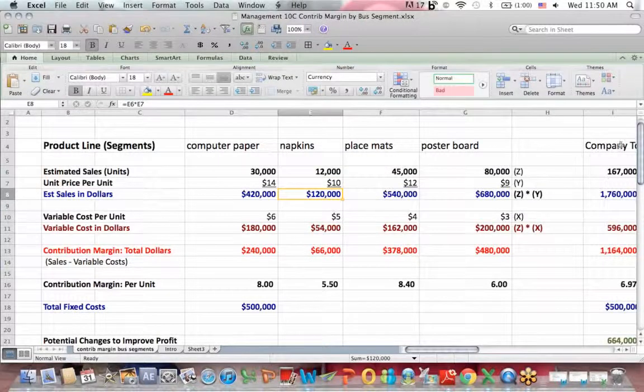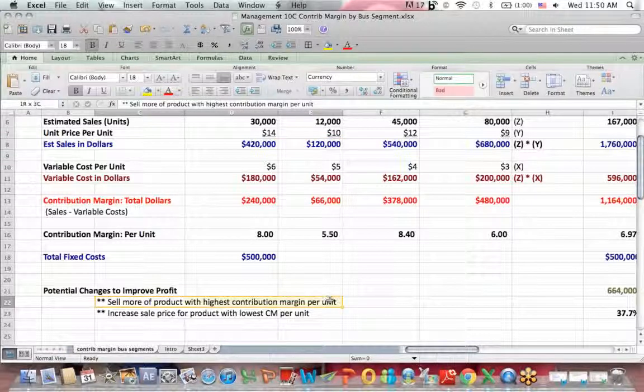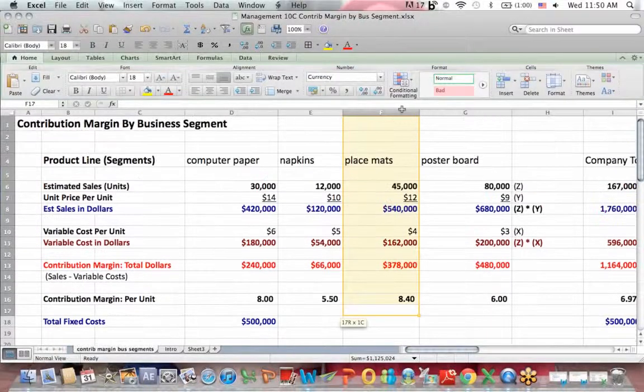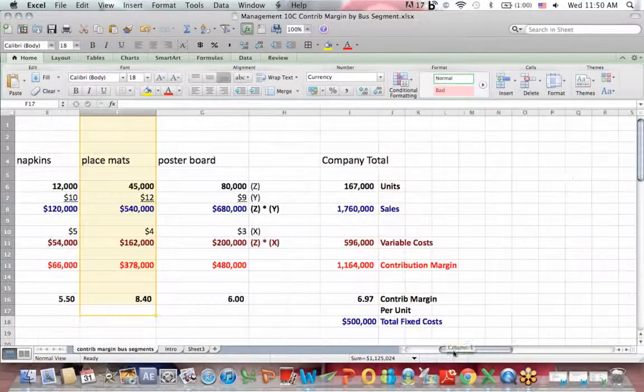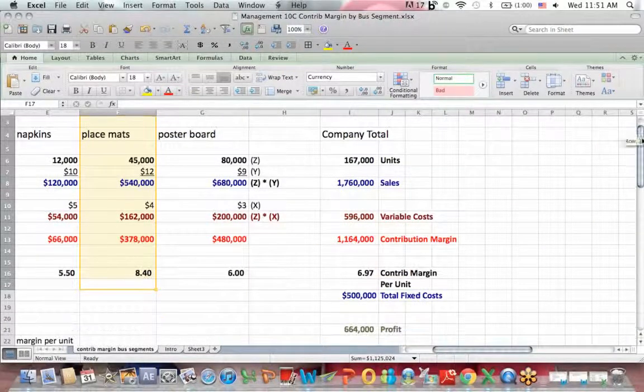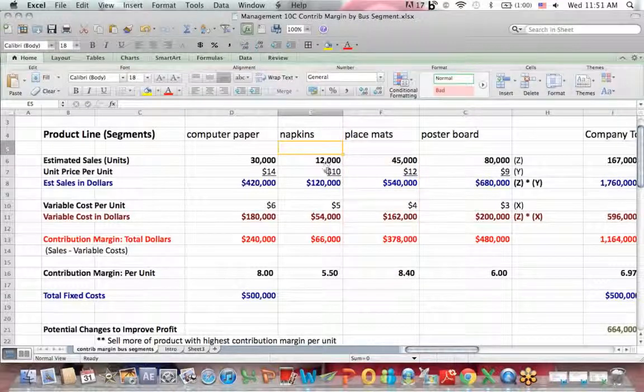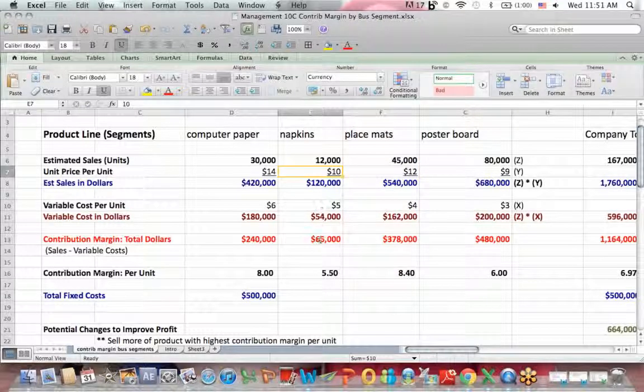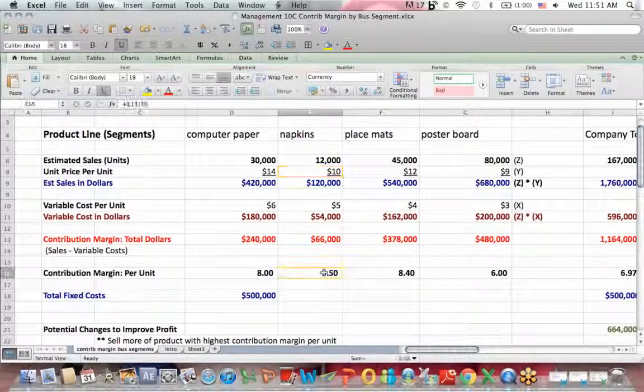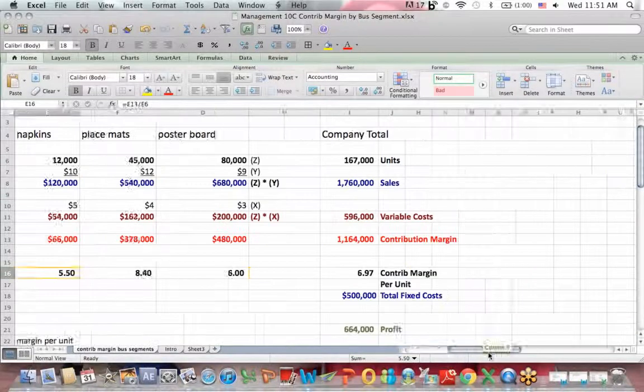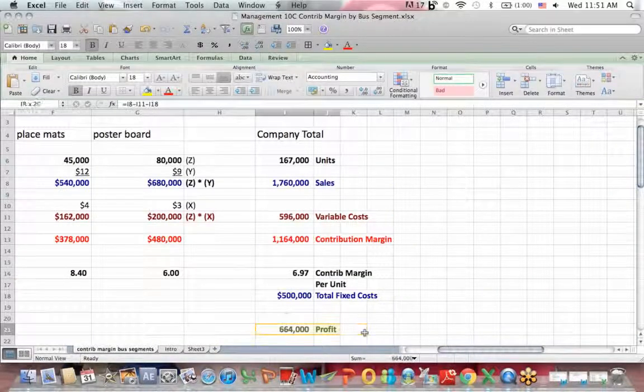What we see is, is that selling more of the product with a higher contribution margin per unit increases profit. And we also see that raising the price, the sale price per unit, on the product that has the lowest contribution margin per unit also increases our profit.